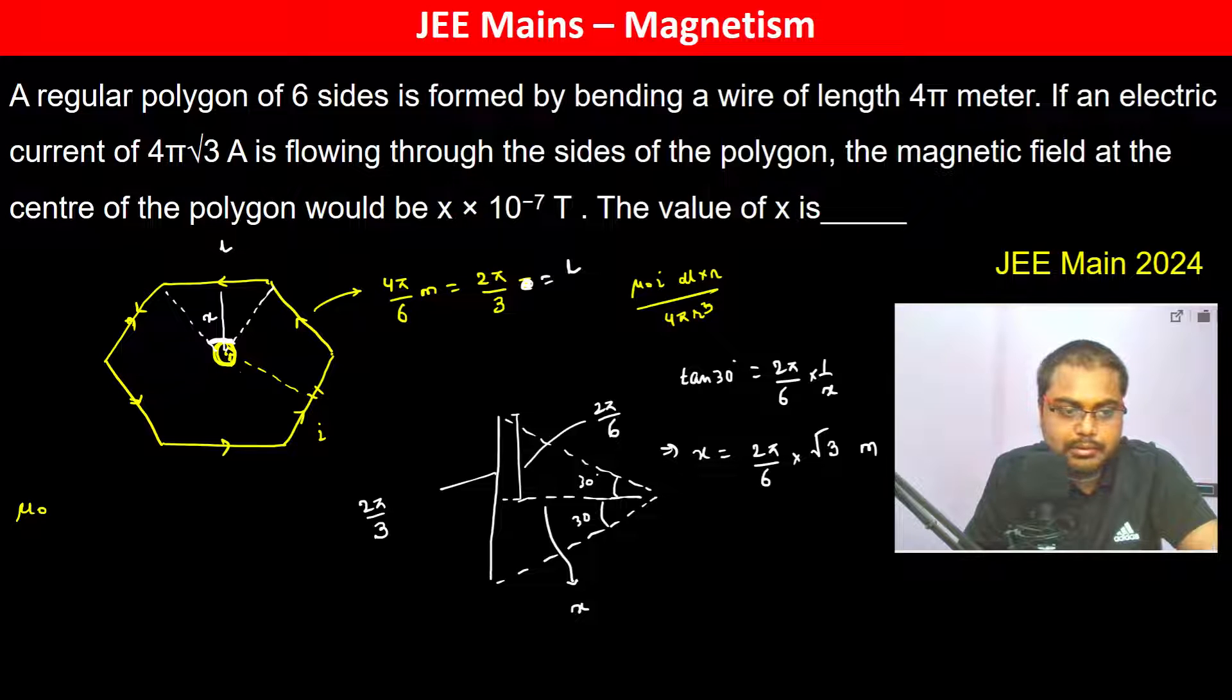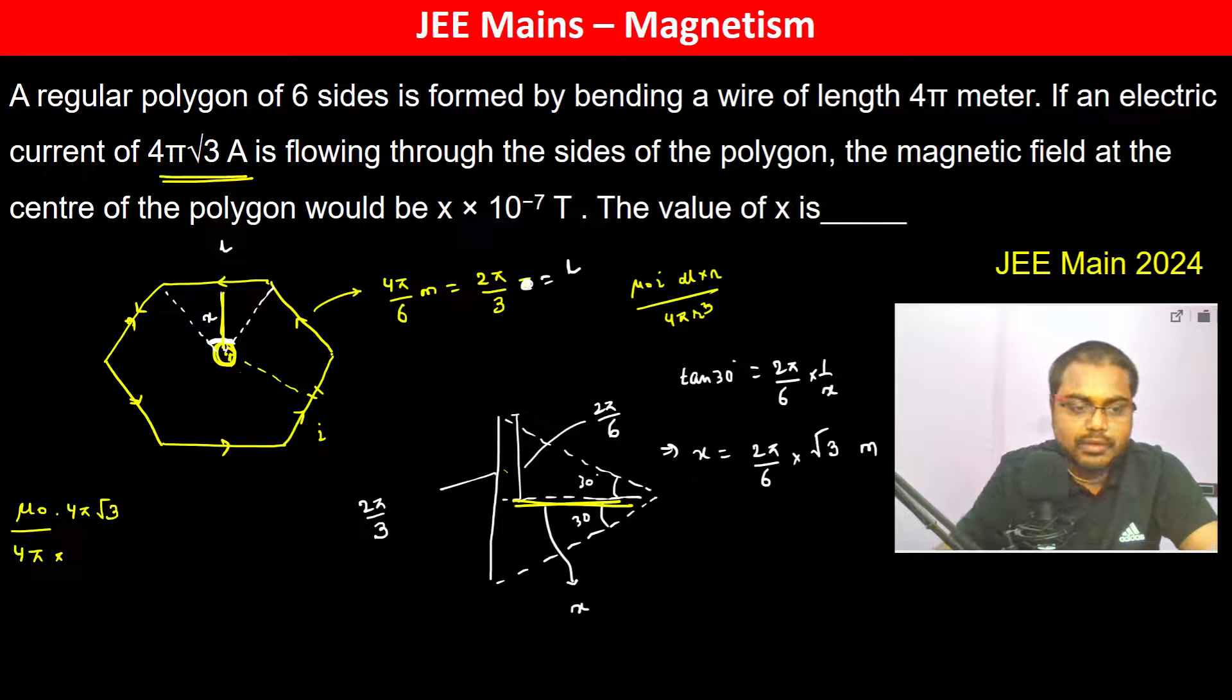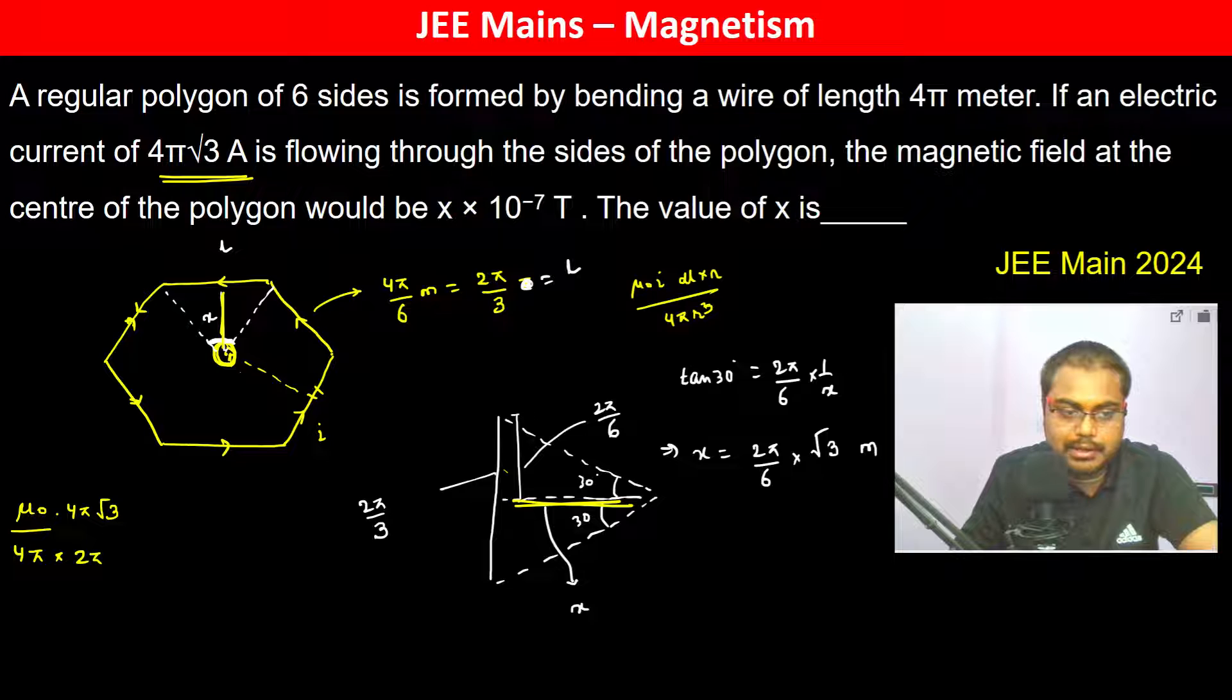μ₀i / 4π, where i is 4π√3 amperes, multiplied by 1/d. The distance d is x, which is 2π√3/6.